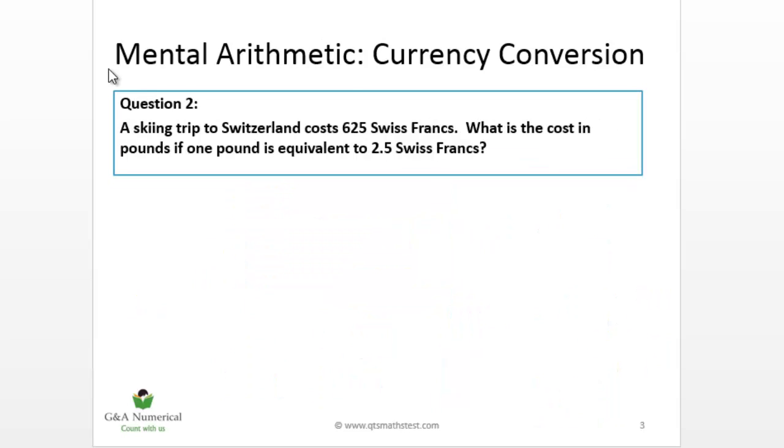So question 2 gets a bit tougher now because we're looking at an unusual currency, which they sometimes do, just to throw you a little bit. But don't be daunted by it. The same method will get you to the answer. So with question 2, we've got a skiing trip to Switzerland costing 625 Swiss francs. What is the cost in pounds if one pound is equivalent to 2.5 Swiss francs?